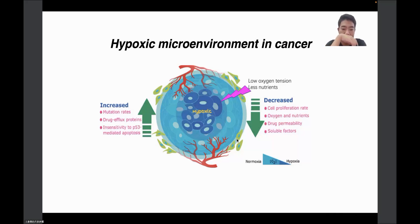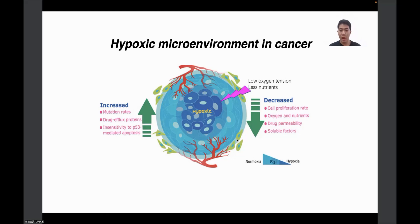I want to talk about the hypoxic tumor microenvironment first. Solid tumors rapidly outgrow their blood supply, leaving tumor regions with oxygen concentrations significantly lower than those found in healthy tissues. Hypoxic conditions lead to cancer cells with increased mutation rates, drug efflux, and evasion of apoptosis, as well as decreased overall cell proliferation, drug solubility, and secretion of soluble nutrients.